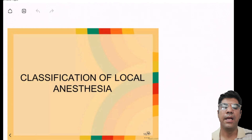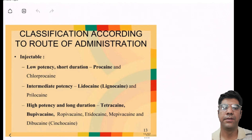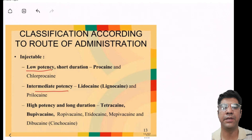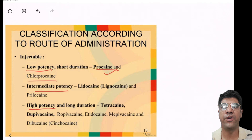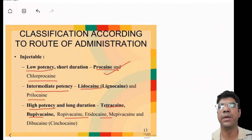Let us discuss the classification of local anesthesia. We can classify local anesthetics based on potency: low potency, intermediate potency, or high potency. Low potency short-duration acting agents are procaine and chloroprocaine — remember this for your entrance exam. Intermediate potency agents are lignocaine and prilocaine, whereas high potency agents are tetracaine, bupivacaine, ropivacaine, etidocaine, mepivacaine, and dibucaine.